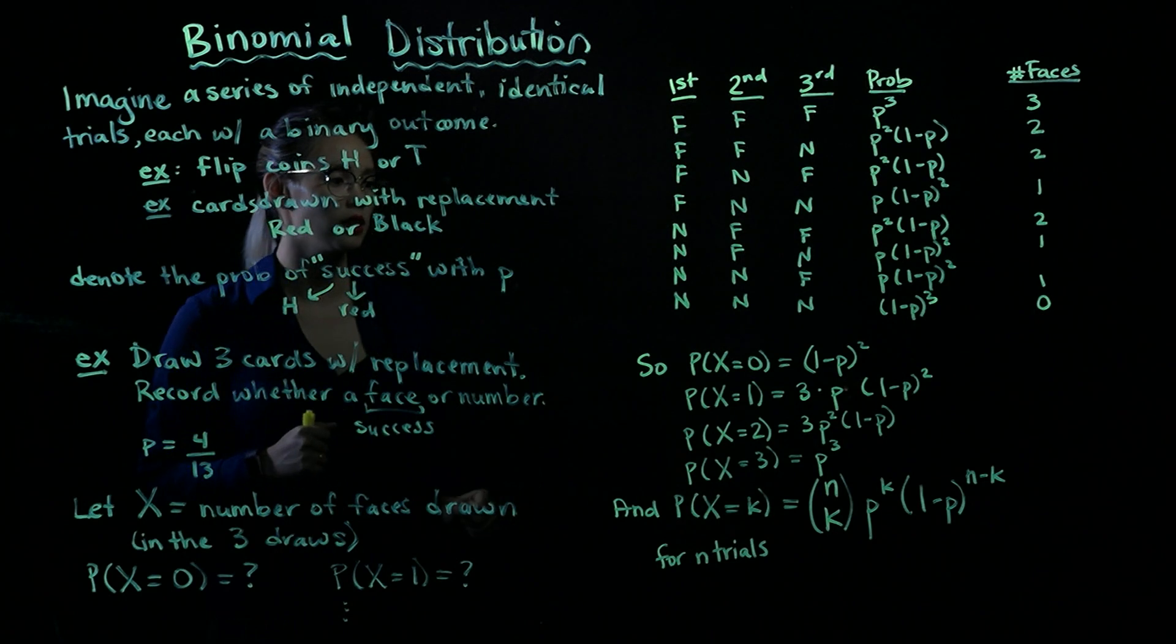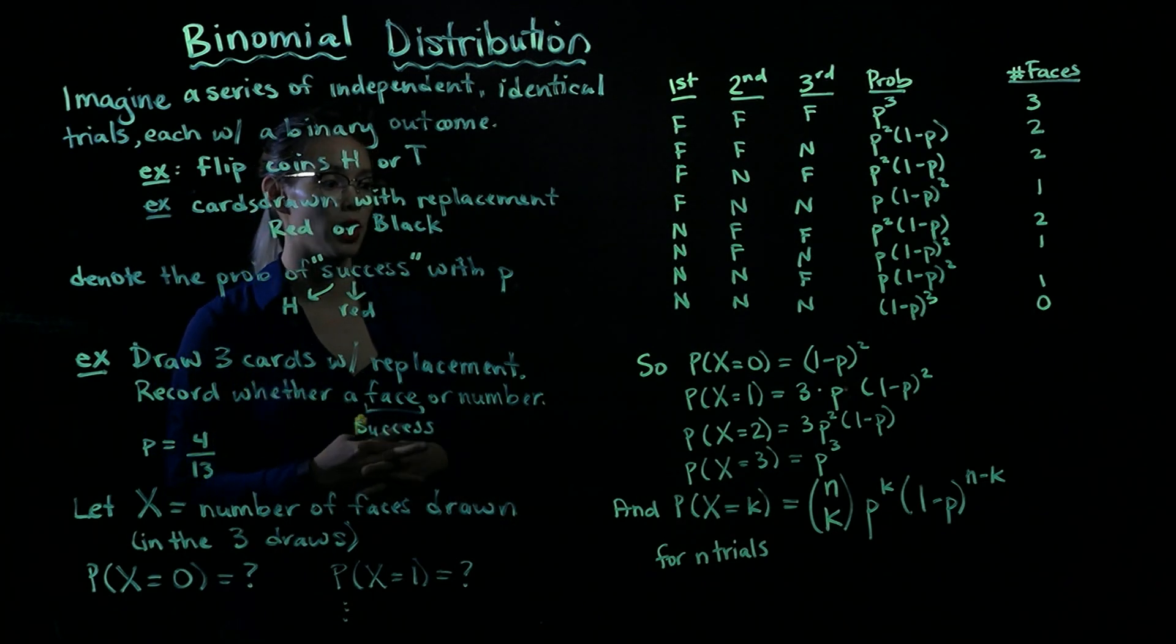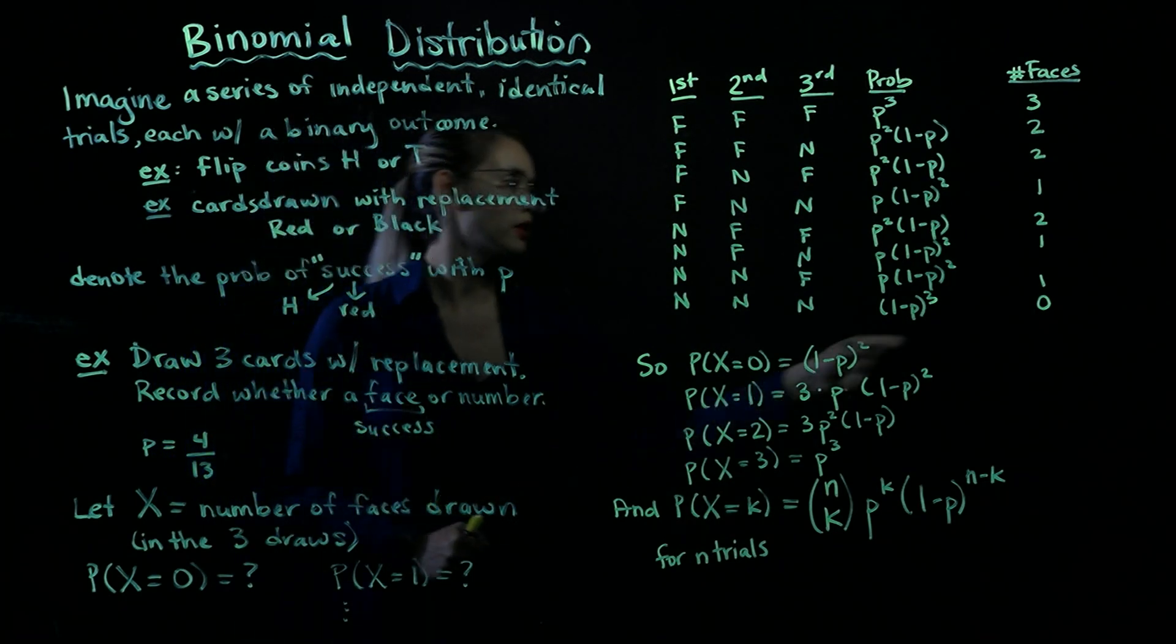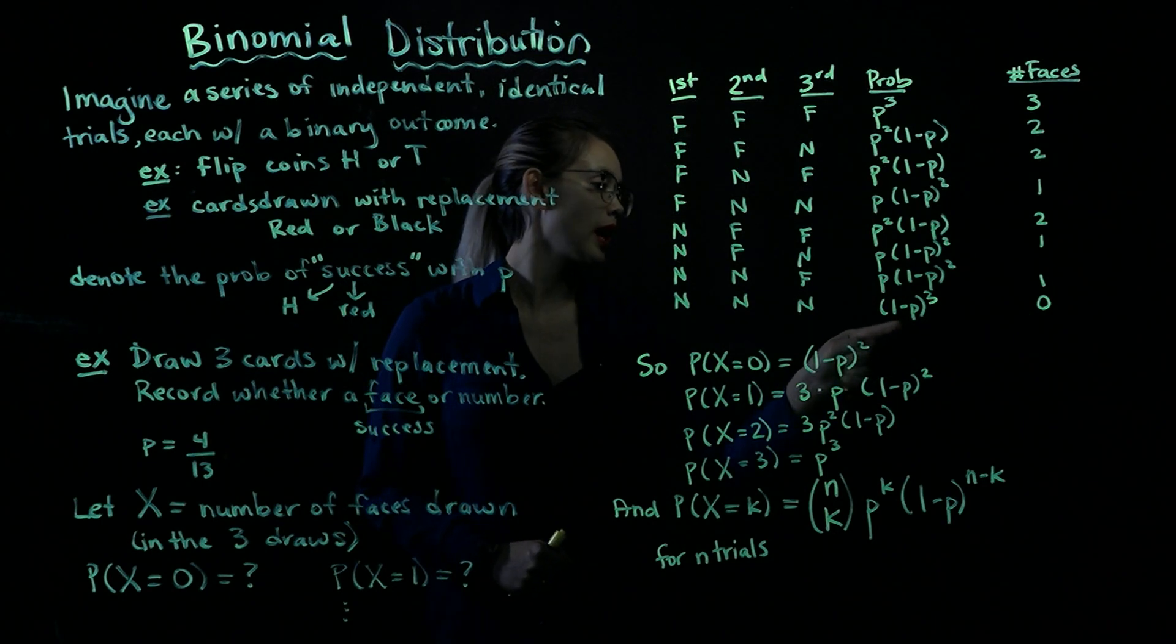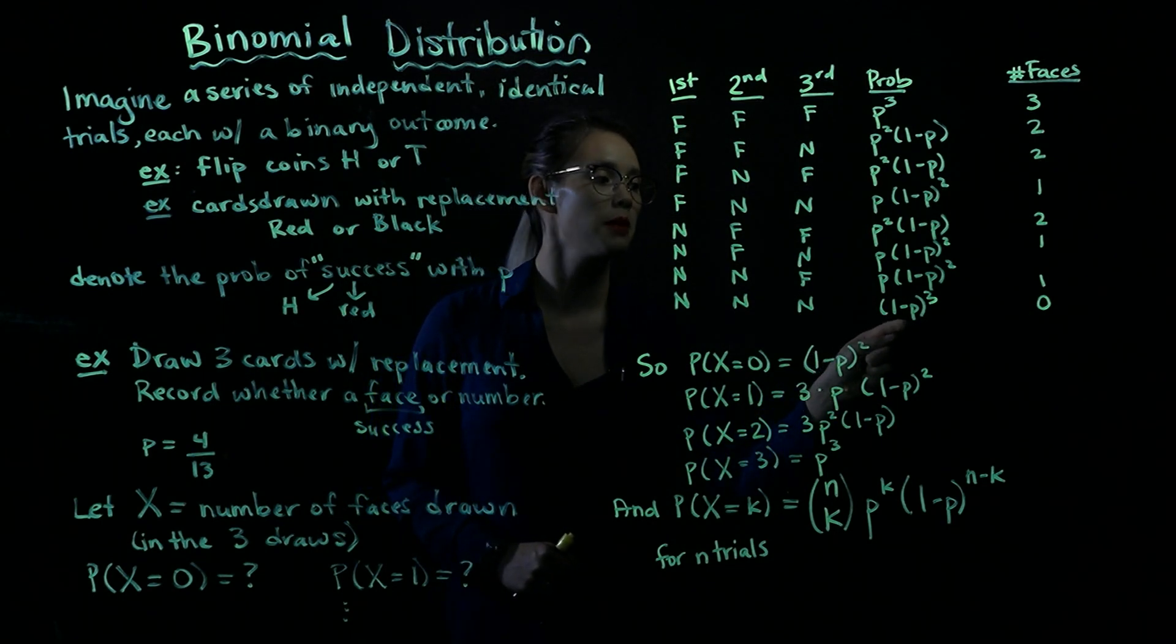So now we've calculated these probabilities. We've figured out how many faces there are. So we can do things like calculate or write down the probability that we have zero faces. So zero faces, that only happens this one way, and that has probability 1 minus P cubed.